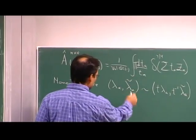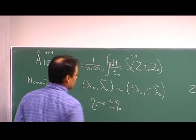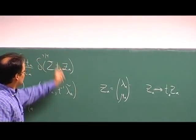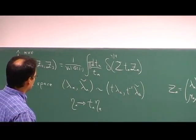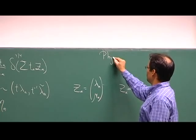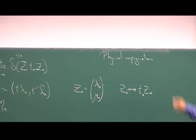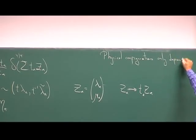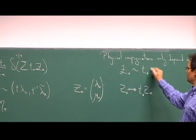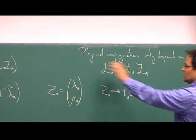But if we also rescale the eta components by T^A — if we do these two transformations at the same time — we get something that is invariant under the scaling because we have something that is supersymmetric. In other words, the physical configurations only depend on the equivalence classes. The bosonic ones were called twisters, so let's call these super twisters.